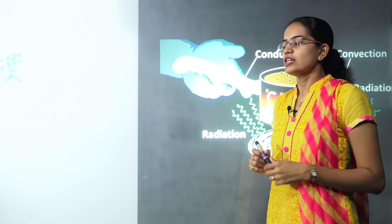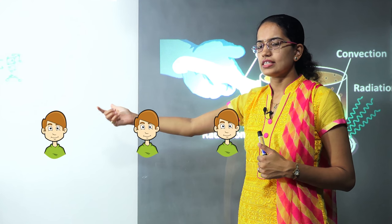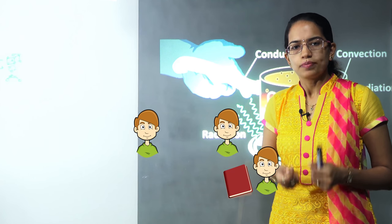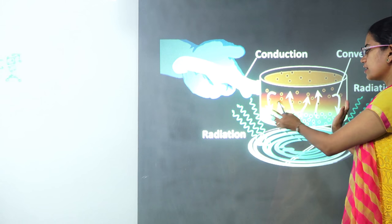The next process is convection. Under convection, what he can do is the child sitting at the back can directly walk up to me and hand over the book. Similarly is the process in convection.